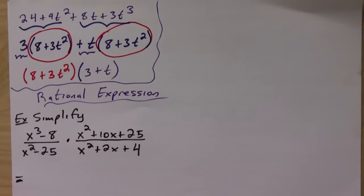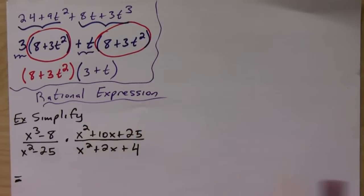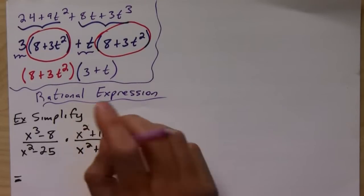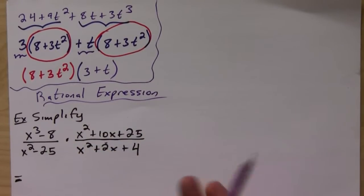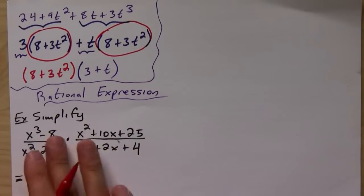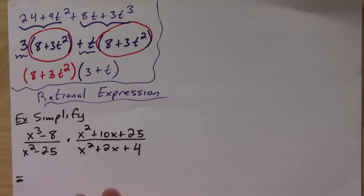...realize that you cannot absolutely cannot say 'oh x squared x squared these cancel.' Huge no-no. You cannot do that. Everything has to be multiplying together for you to be able to divide the terms from top to bottom.